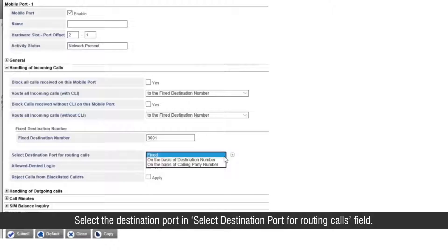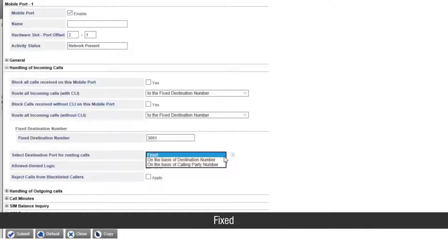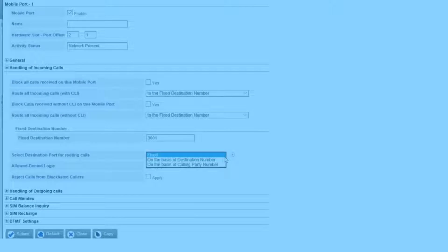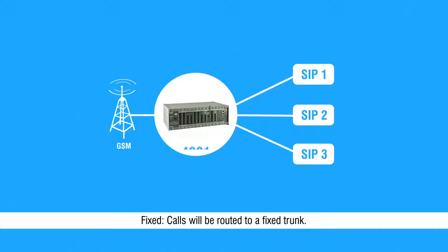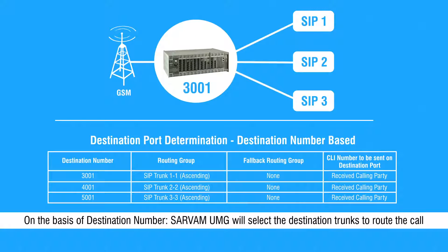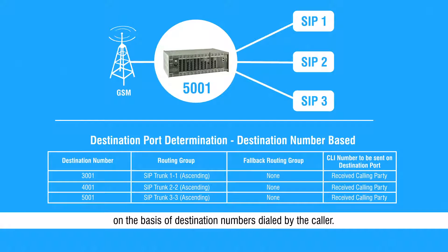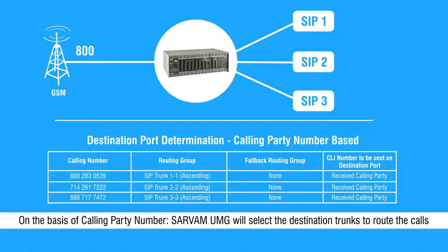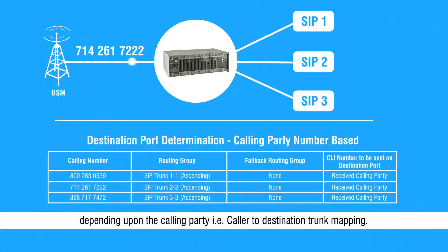Select the destination port in the 'select destination port for routing calls' field. There are following options available: fixed, on the basis of destination number, on the basis of calling party number. Fixed: calls will be routed to a fixed trunk. On the basis of destination number: Servum UMG will select the destination trunks to route the calls on the basis of destination numbers dialed by the caller. On the basis of calling party number: Servum UMG will select the destination trunks depending upon the calling party, that is caller-to-destination trunks mapping.